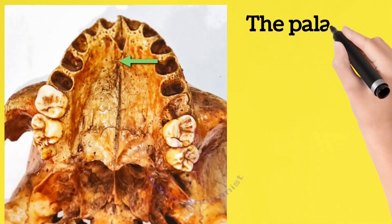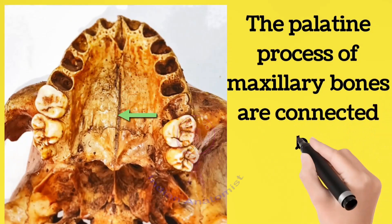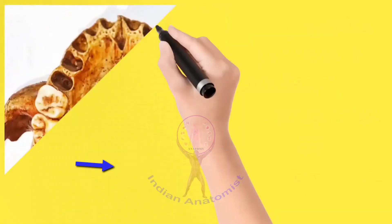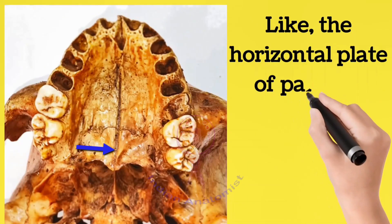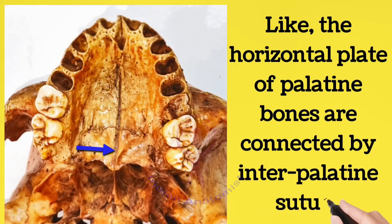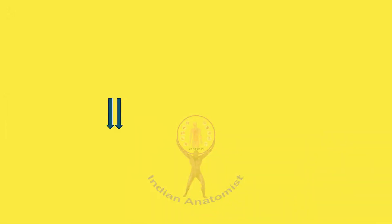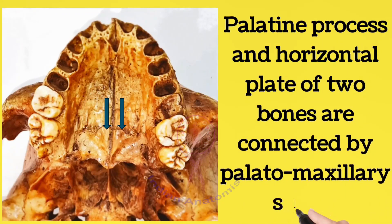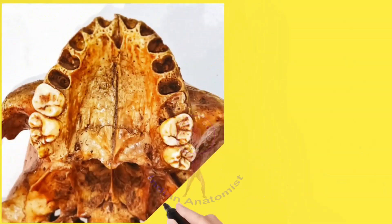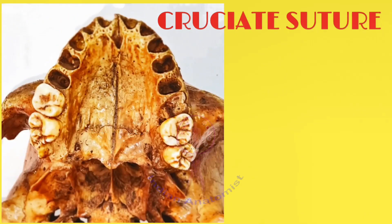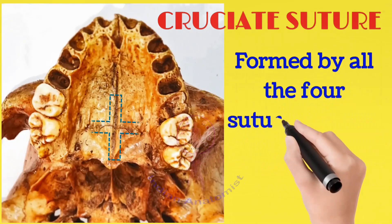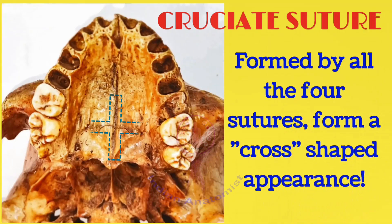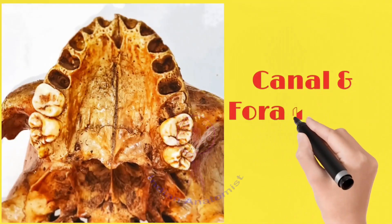The palatine processes of the maxillary bones meet at the intermaxillary suture. The horizontal plates of the palatine bones meet at the interpalatine suture. The palatine process and the horizontal plate of the two bones are connected by the palatomaxillary suture. The cruciate suture is formed by all four sutures, giving a cross-shaped appearance.